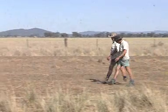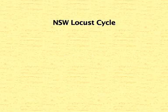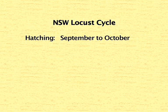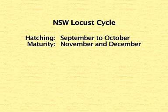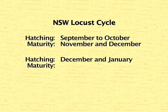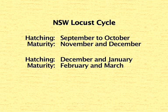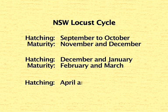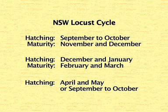Locust occurrence depends entirely on weather and feed conditions. In New South Wales, hatching typically begins in September in the north through to October in the south, with maturity of locusts occurring in November and December. Eggs laid by this generation of adults will hatch in late December and throughout January, producing a second generation of adults in February and March. The second generation of adults may lay eggs and, depending on conditions, these may hatch before winter in April and May, or lay dormant until the following September to October. Throughout this period of spring to autumn, migration of locusts from other areas may occur, and conversely a generation of adults may emigrate from the area.